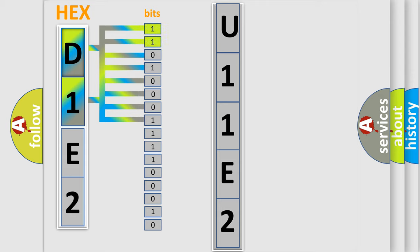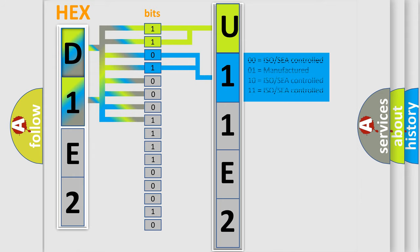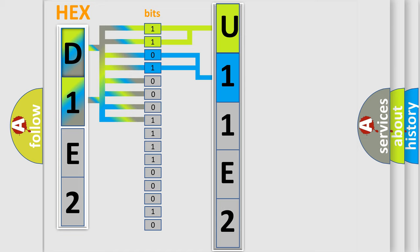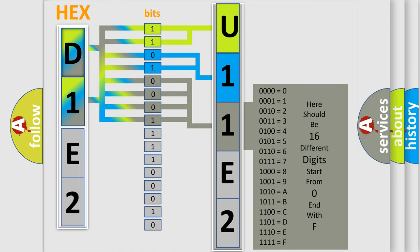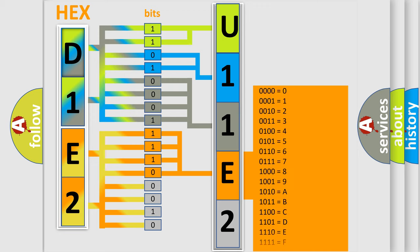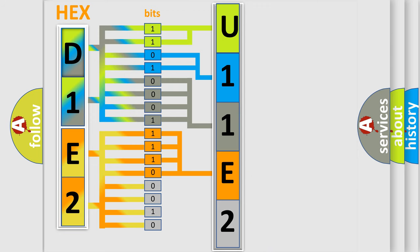By combining the first two bits, the basic character of the error code is expressed. The next two bits determine the second character. The last bits of the first byte define the third character of the code. The second byte is composed of a combination of eight bits: the first four bits determine the fourth character, and the combination of the last four bits defines the fifth character. A single byte conceals 256 possible combinations.